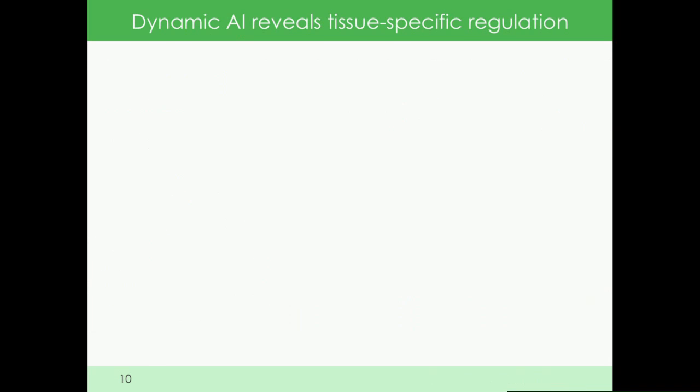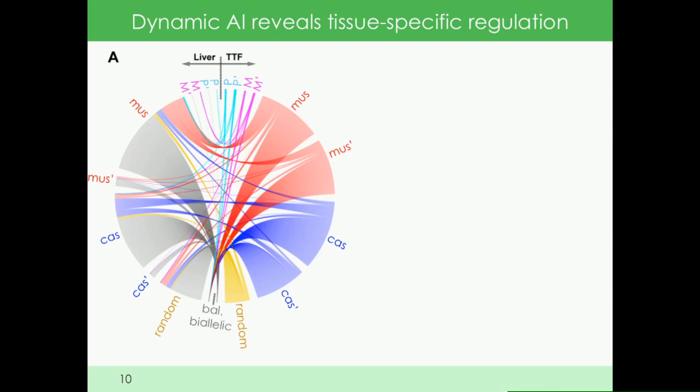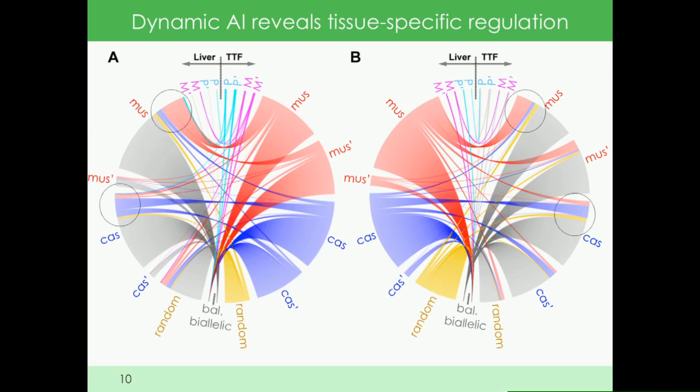We wanted to compare cell-type specificity—whether a gene with genotypic imbalance in one direction, for example toward the cast allele in tail-tip fibroblasts, shows the same in liver. By and large, genes that were imbalanced in tail-tip fibroblasts were not imbalanced in liver and vice versa. However, the ones that were—in four out of five cases—maintained their allelic preference.